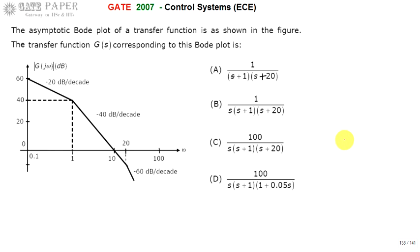Hello, we are discussing about GATE 2007 ECE paper. The asymptotic Bode plot of a transfer function is shown. Find the transfer function corresponding to this Bode plot.